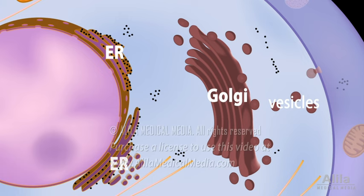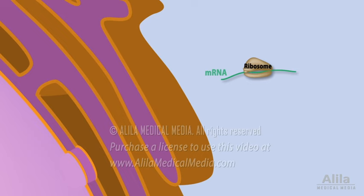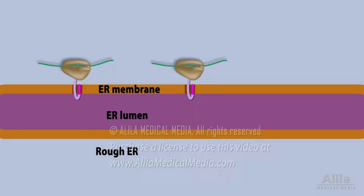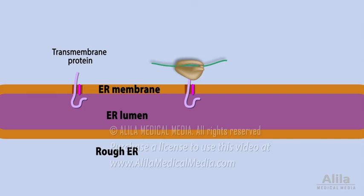The ER is a network of connected flattened sacs called cisternae, and its membrane is continuous with the outer nuclear membrane. Part of the ER appears rough, as it is covered with ribosomes — this is where the synthesis of secretory and transmembrane proteins takes place. These proteins have a signal sequence within their amino terminus which, as soon as it emerges from the ribosome, targets the RNA-ribosome complex to the ER membrane where translation continues. Transmembrane proteins stay in ER membranes, while secretory proteins are released into the ER lumen.